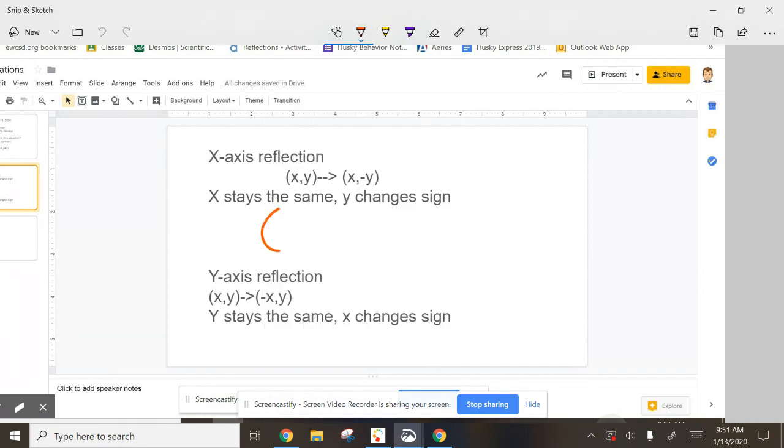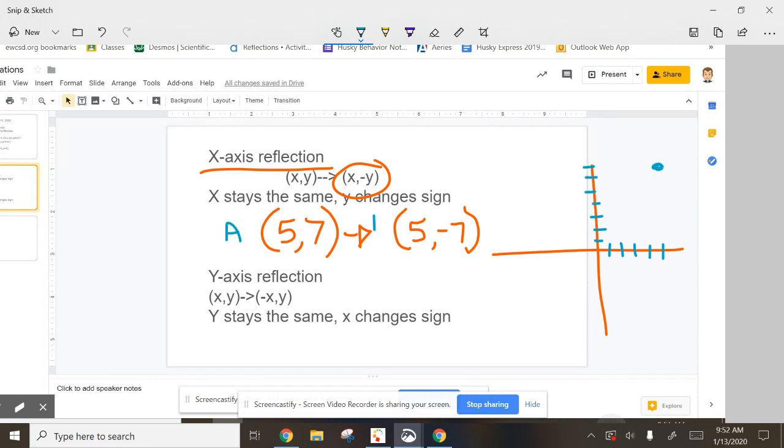I'm going to go ahead and take this. If I made a point of (5,7) and I wanted to do it under this rule, an x-axis reflection—the X stays the same. So this would be a reflection where the X would stay the same, and then what would change? The Y. So this positive 7 will become a negative 7. If I was to look at the coordinate graph and plot these points, the first point would be over 5, up 7—that would be up here. We're going to call this A.